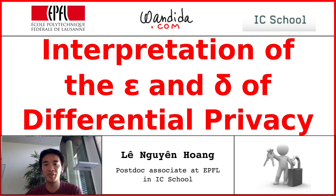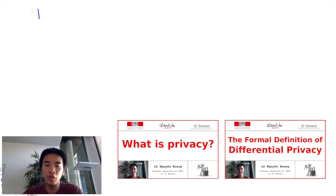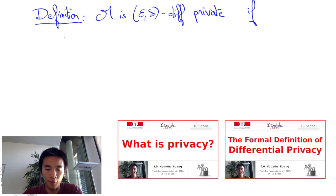In this video we will see how to interpret the epsilons and deltas of differential privacy. Recall that a mechanism is epsilon-delta differentially private if for any two databases x and y that differ on one entry.